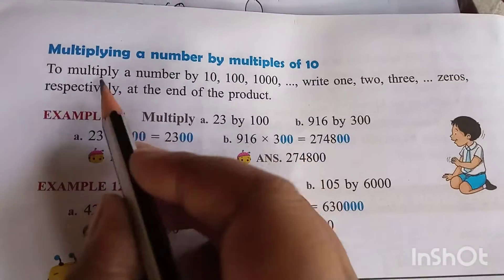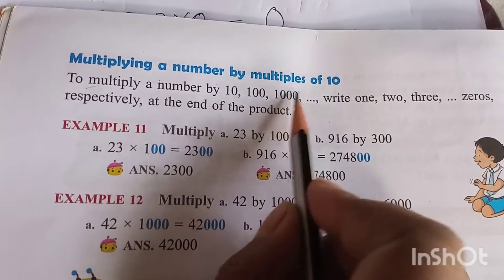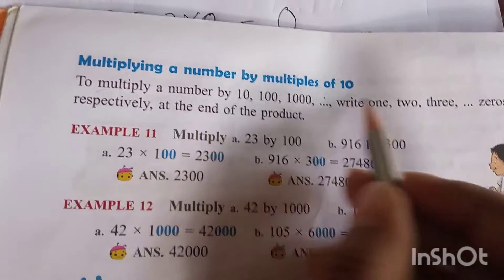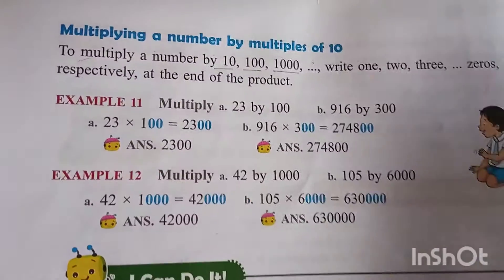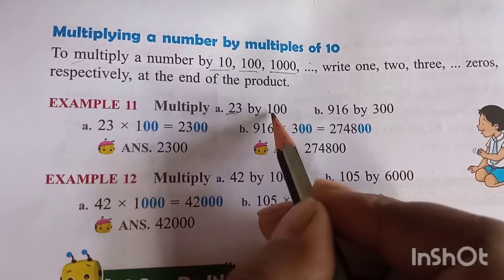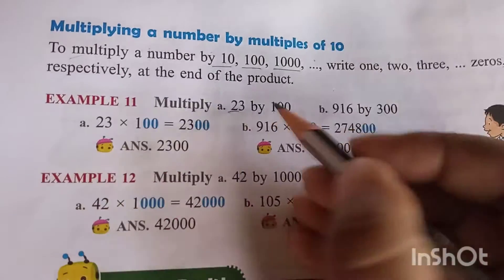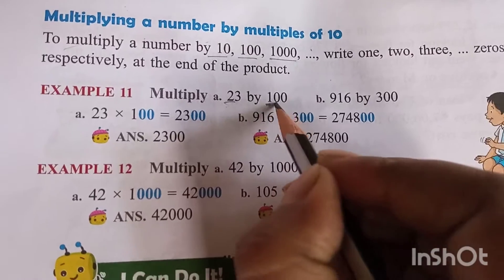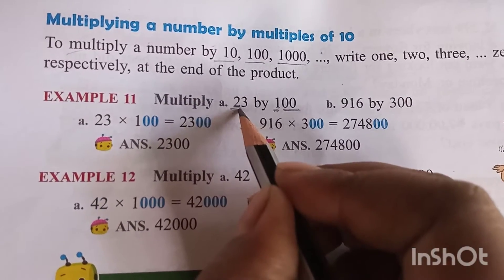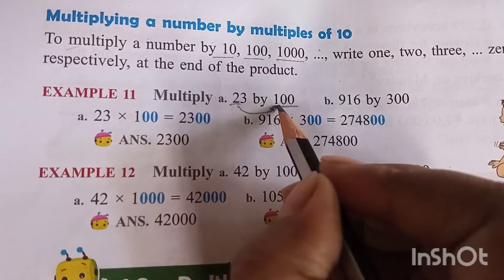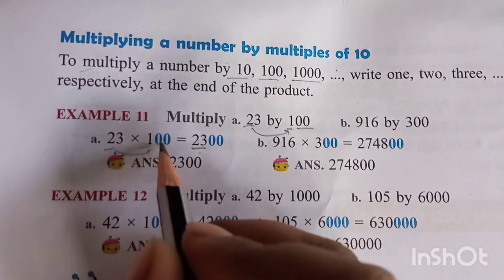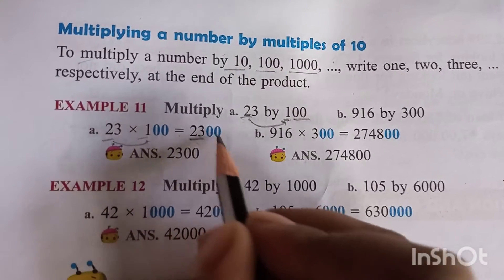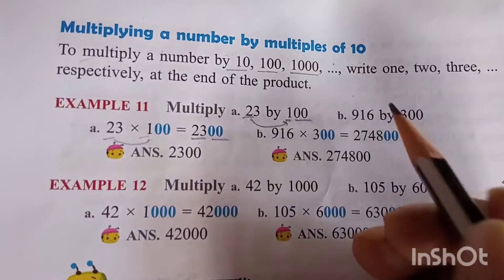Before learning division, let us learn multiplying a number by multiples of ten — meaning ten, hundred, one thousand, ten thousand. It is very easy. For example, to multiply 23 by 100: separate the one and zeros, multiply 23 by one which gives 23, then attach the two zeros.